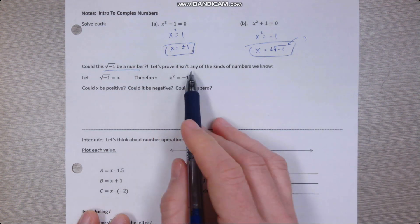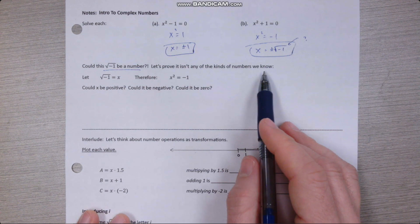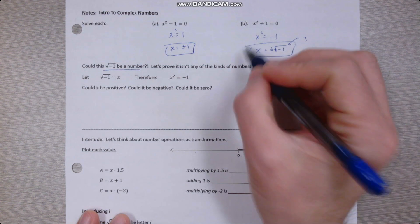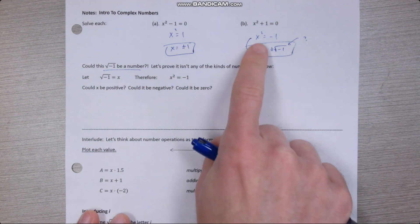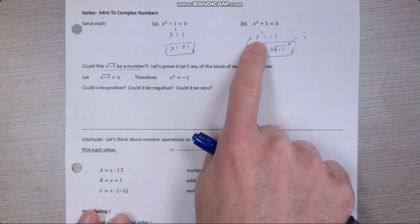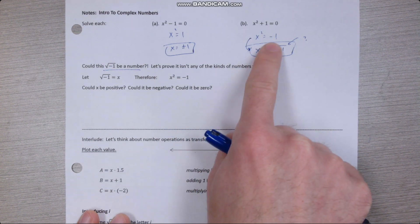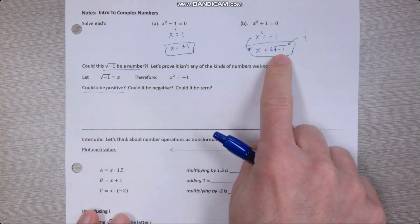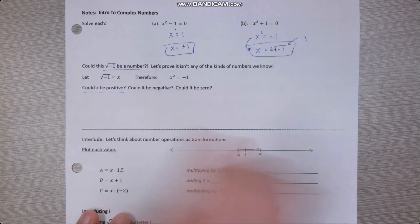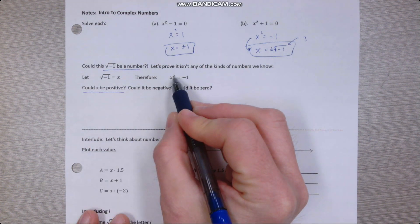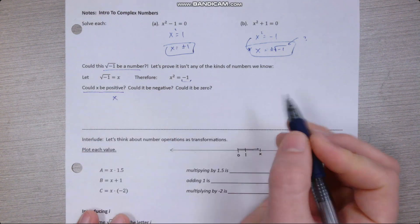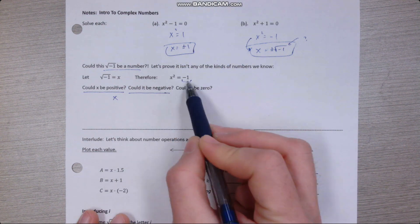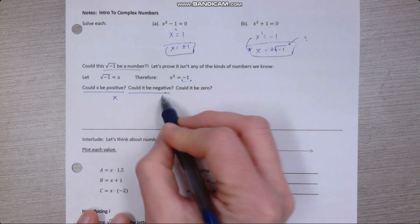Well, let's try and prove for ourselves that it's not any of the kinds of number that we know already. So we know that it needs to satisfy this equation, the one that came the step before. So we know that whatever it is, if I plug it in as x and square it, it should end up equaling negative 1. So could x be a positive number? If I have a positive number and I square it, that can't be negative 1. So it can't be a positive number. Could it be a negative number? If I have a negative number and I square it, that is also positive, so it couldn't be negative 1, so it couldn't be negative.